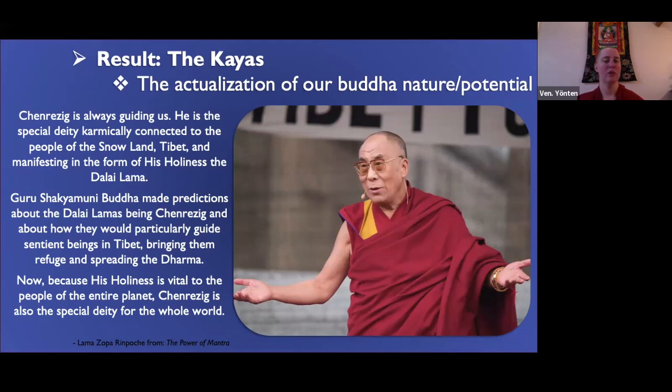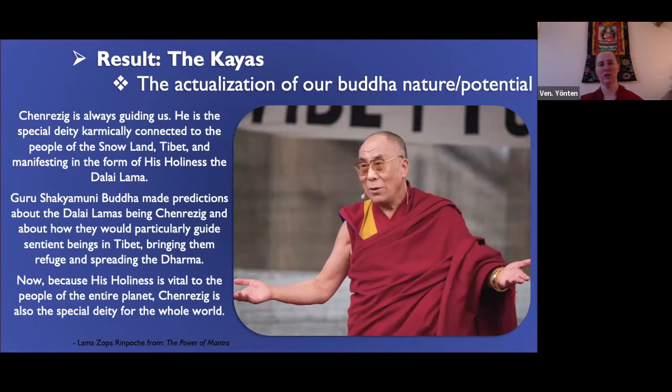Guru Shakyamuni Buddha made predictions about the Dalai Lamas being Chenrezig and how they would guide the sentient beings of Tibet, bringing them refuge and spreading the Dharma. Because His Holiness is vital to the people of the entire planet, Chenrezig is also the special deity for the whole world. So that's a snapshot of basis, path, and result. Looking at the text, we're looking mostly at relative bodhicitta and then shifting to ultimate bodhicitta, which we'll discuss more after lunch.